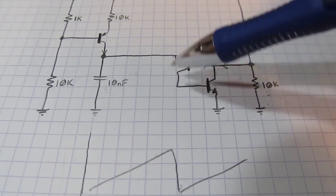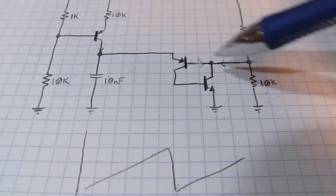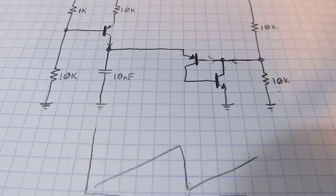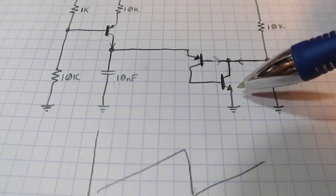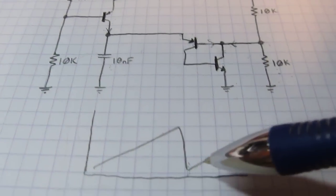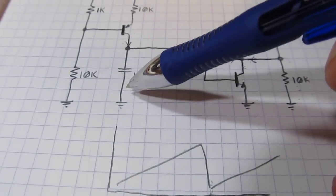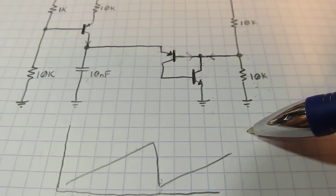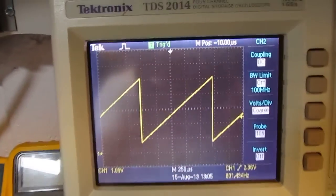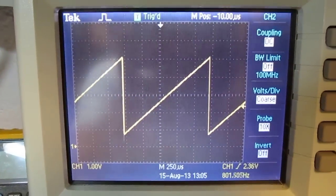Because there isn't any current anymore available to keep this structure conducting. So when it shuts off, the process repeats itself. The capacitor goes and gets charged again until it hits that threshold and it starts over. And that's what the resulting output looks like on the scope.